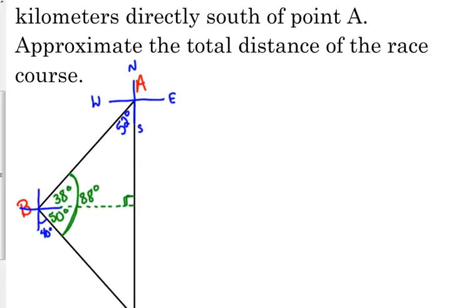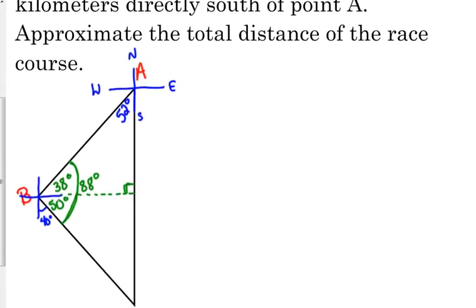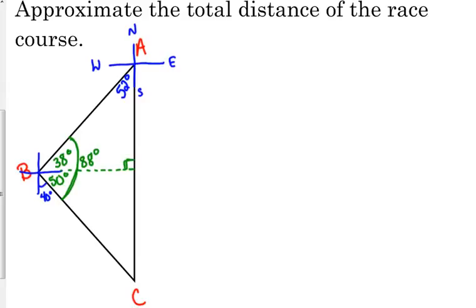So, this whole angle right here is 88. Now, they didn't tell us anything about the angle at C, other than the fact that point C is 8 kilometers directly south of A. So, we can label this side over here as 8 kilometers, but we now have two out of three angles in a triangle. So, 88 plus 52 is 140. 88 plus 2 is 90, 90 plus 50 is 140. So, that means that this angle down here is 40 degrees.